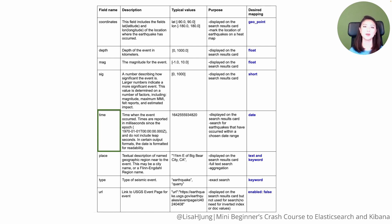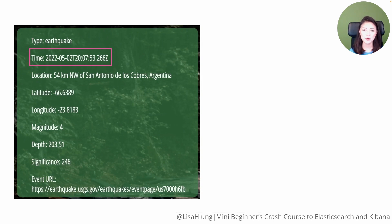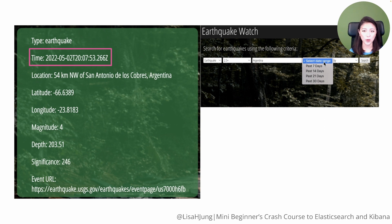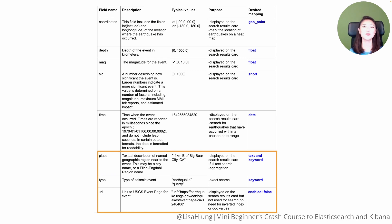Let's talk about the field time. The value of this field will be displayed in the search results card, and it'll also be used to search for earthquakes that have occurred within the chosen date range. To do so, we'll run range queries on this field, so we'll assign the field type date.